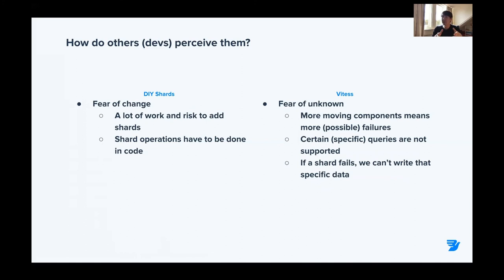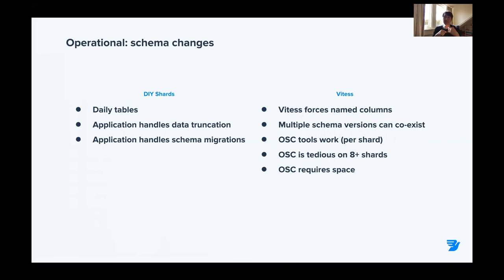With Vitess, there's a fear of the unknown — developers don't know how Vitess works, whether it's proven, or how to handle queries since not all of them are supported. But this is something you can train and learn; it's not something you can't overcome. On the operational side regarding schema changes: with our own shards, everything is handled by the application, so schema changes are managed without my involvement — which is perfect. With Vitess, that's not possible in the same way. However, Vitess does support multiple schemas over multiple shards, allowing you to run online schema changes, though doing that across eight shards with 500 gigabytes to a terabyte of data takes considerable time.